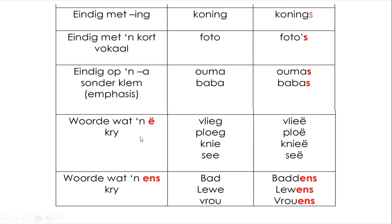Nou gaan ons kyk na woorde wat 'n ee met deelteken kry. Dis woorde soos 'vleë' - vleg word vleë. Ploeg word ploeë. Knie word knieë. En 'see' - the ocean - word 'seë'.